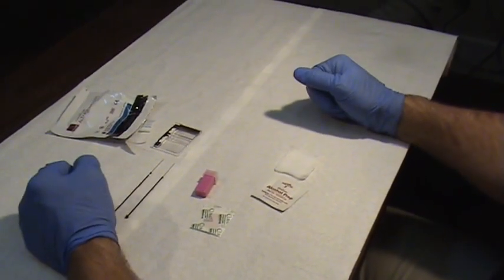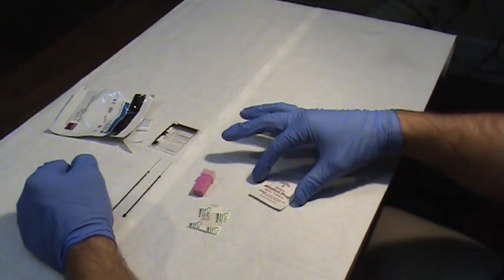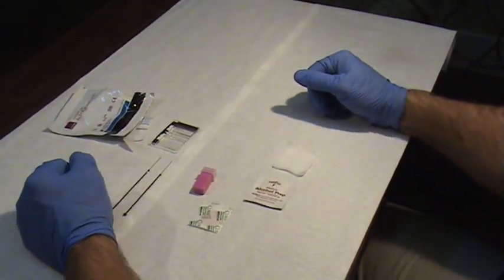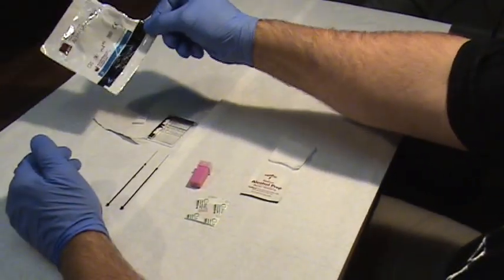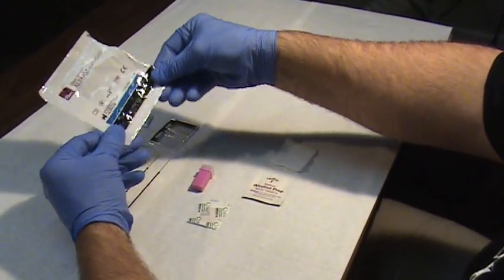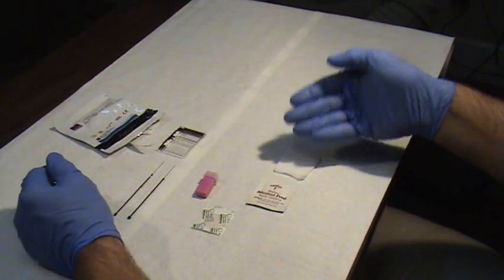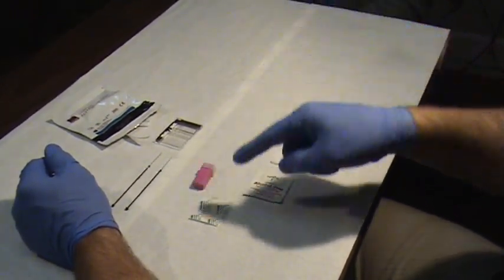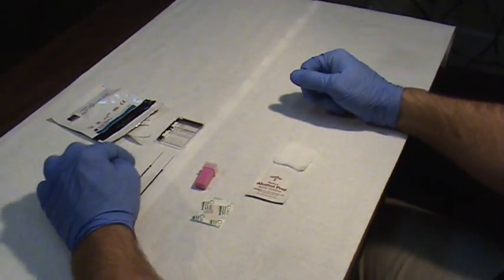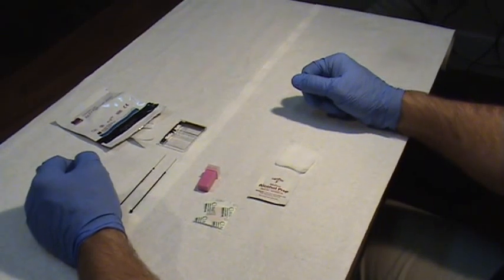When you're ready to do your blood test, you want to make sure that your needed items are all ready. You want to have your test cassette torn open, place your cassette on the table. You want to have your gauze, your alcohol pad, your band-aid, your lancet, and your 2 capillary tubes.